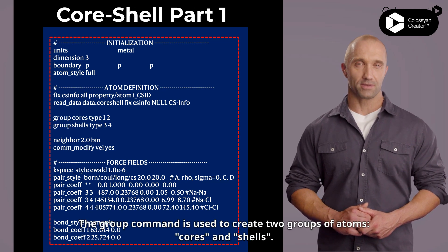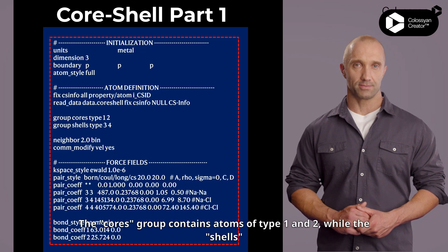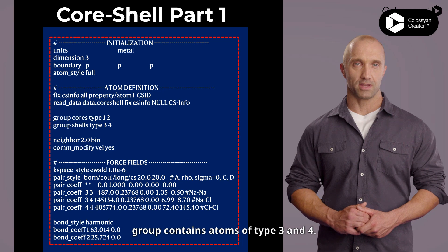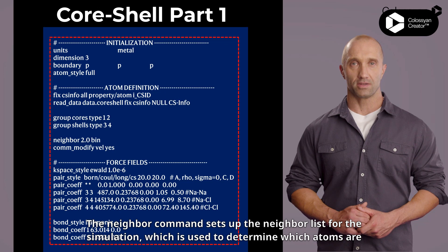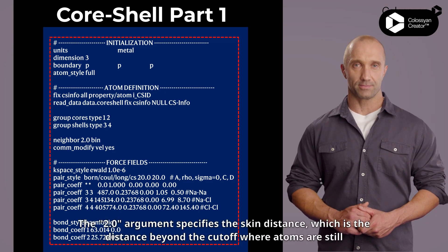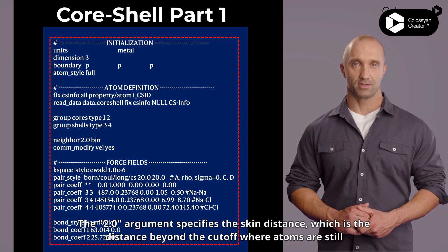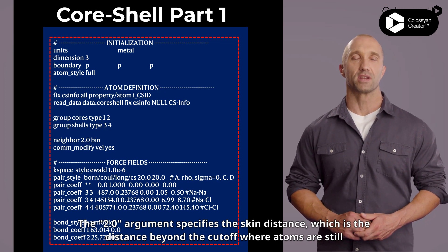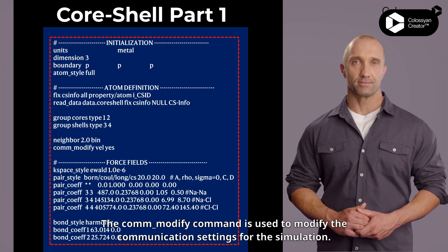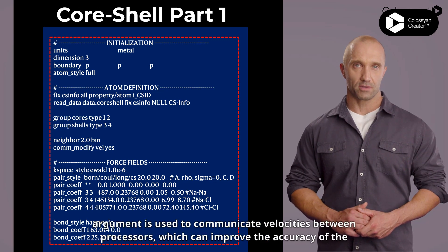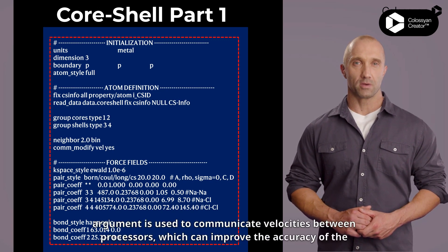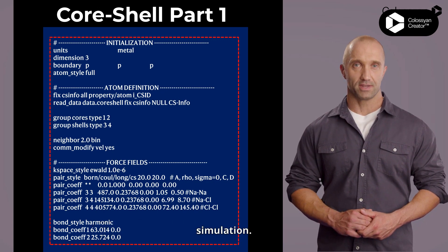The fix csinfo and null arguments are used to ensure that the core/shell information is not overwritten during the simulation. The group command is used to create two groups of atoms, cores and shells. The cores group contains atoms of type 1 and 2, while the shells group contains atoms of type 3 and 4. The neighbor command sets up the neighbor list for the simulation, which is used to determine which atoms are interacting with each other. The 2.0 argument specifies the skin distance, which is the distance beyond the cutoff where atoms are still considered to be neighbors. The comm_modify command is used to modify the communication settings for the simulation.